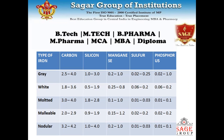Malleable cast iron has carbon 2.0–2.9%, silicon 0.9–1.9%, sulfur 0.02–0.2%, and phosphorus 0.02–0.2%. Nodular cast iron has carbon 3.2–4.2%, silicon 0.2–1% manganese, sulfur 0.0–0.03%, and phosphorus 0.01–0.1%. These are the different compositions used in grey, white, mottled, malleable, and nodular cast iron.